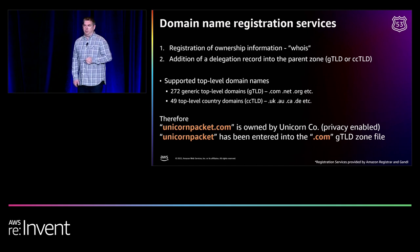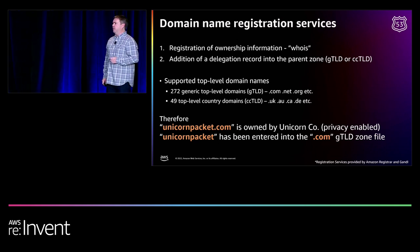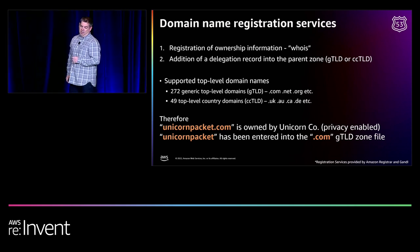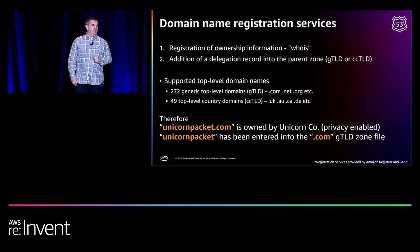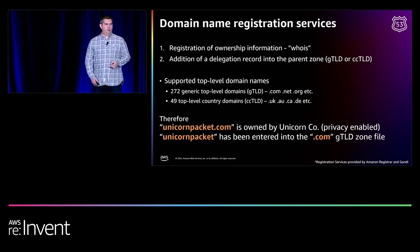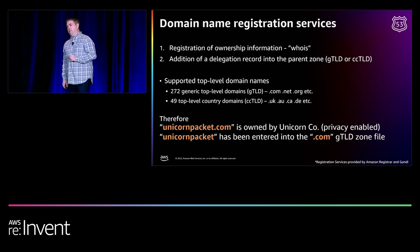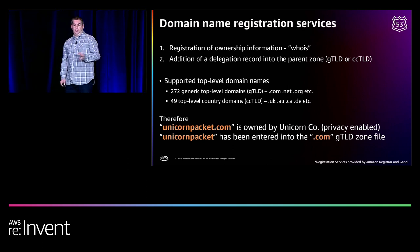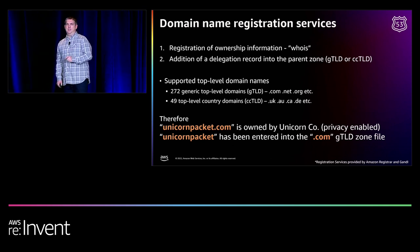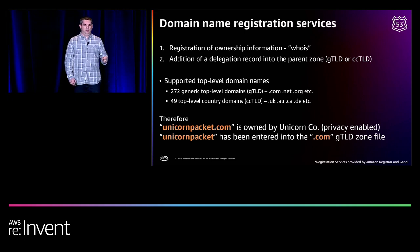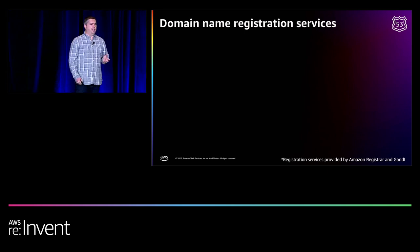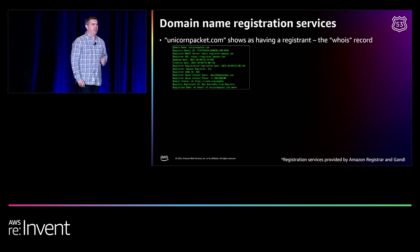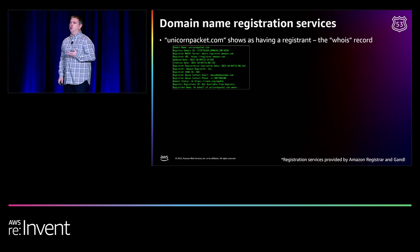In terms of concepts here — unicornpacket.com is owned by the Unicorn Company, and it has been entered into the .com zone file. You've probably heard of a WHOIS record — that's the registration process, establishing the record of who owns this domain name. Back in the day, WHOIS showed very clear details like names and addresses. Now there's a lot more focus around privacy, so many registrars offer a service where you can hide that publicly. The details are still with the registry, but it's not necessarily visible in WHOIS. And unicornpacket.com has also been entered into the .com zone file — that's the delegation piece.